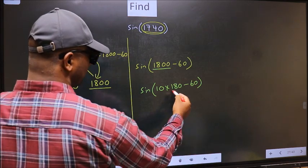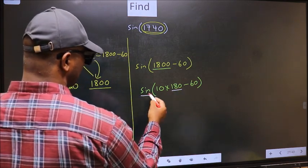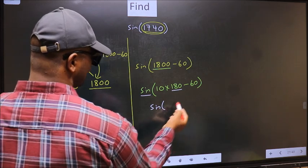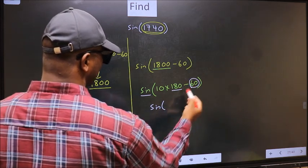Next. Here we have 180. So sine is not going to change. It will remain sine. And inside, we get this angle 60.